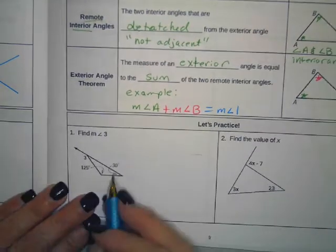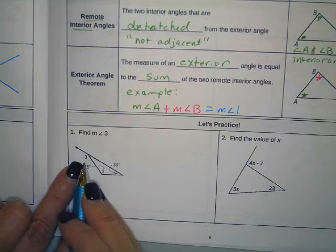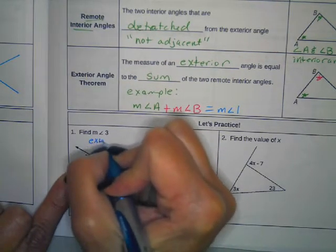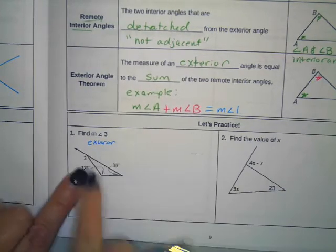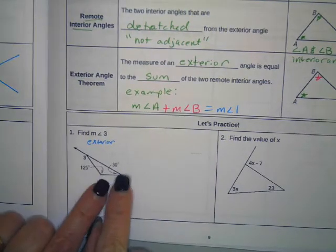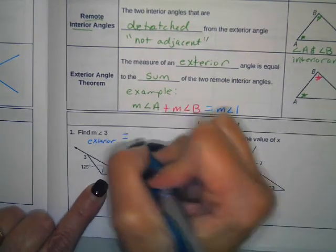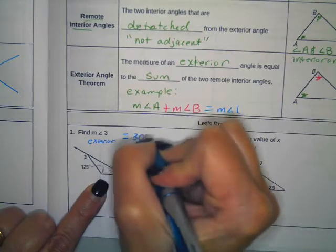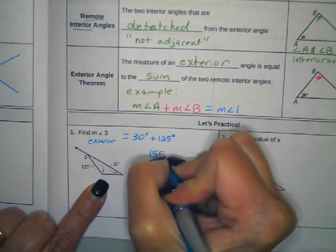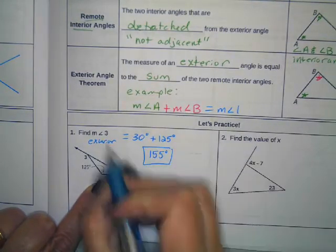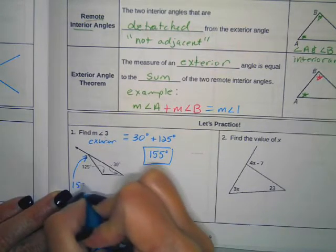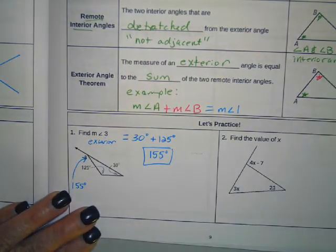Okay, so let's talk about how to use this. Well, the measure of angle three, three is exterior, right? So I need to use the two remote interior angles. This angle is adjacent. We don't want this angle. We're more concerned about these angles. So the measure of angle three equals the sum of 30 degrees plus 125 degrees, which is 155 degrees. That is the measure of angle three. So this angle is 155 degrees.